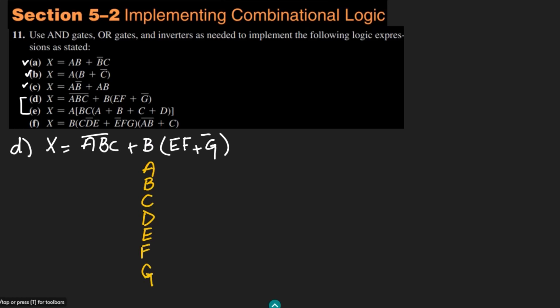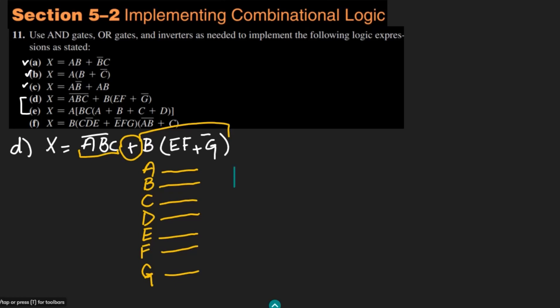Let me draw the input lines for them. We have these 7 input lines. I can very easily see that here we have this first expression and then this second expression, and these are combined together by an OR gate. I am not restricting myself to a two-gate circuit, so I can use any number of inputs to a gate. Here I have a, b, c and the complement of it, so let me use an AND gate. The AND gate has three inputs: first is a, second is b, and third is c.